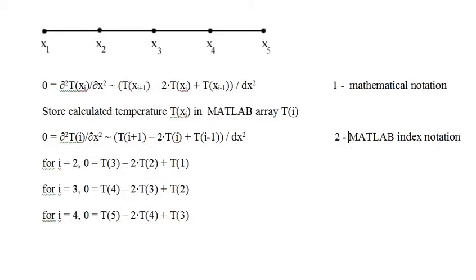The first equation shows the result of making the finite difference method substitution for the second-order spatial derivative in the model written in mathematical notation — where T is a mathematical function defined on the real line and the xi's are real number coordinates — resulting in a linear equation containing the unknown temperatures at the grid points. We will calculate the temperatures at the grid points using MATLAB and store them in an array named T. We'll store the temperature calculated for the i-th grid point, at xi, in the i-th element of MATLAB array T, and write the computational equation in index notation, as shown in equation 2.